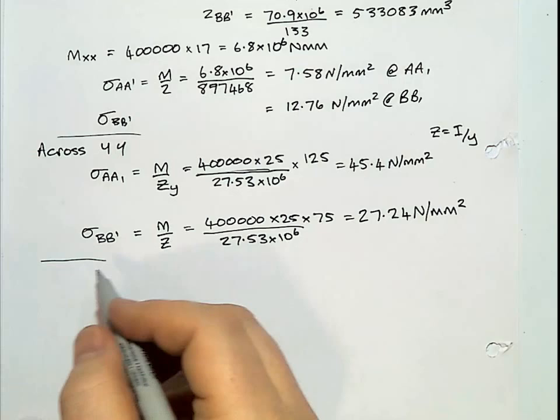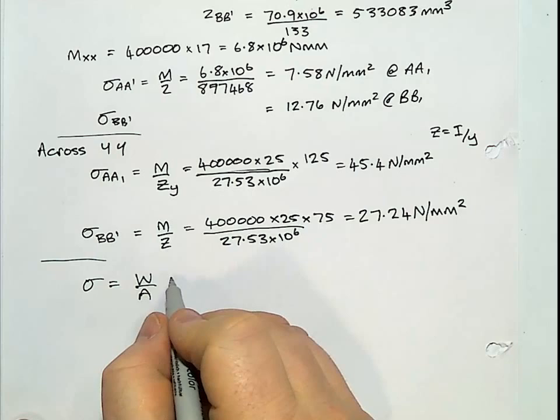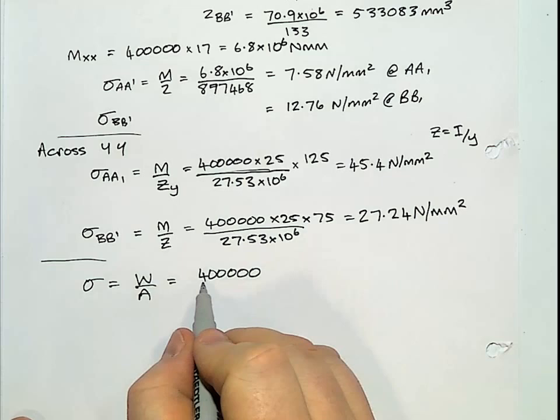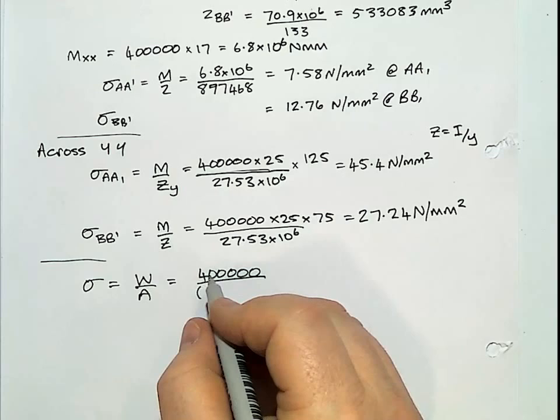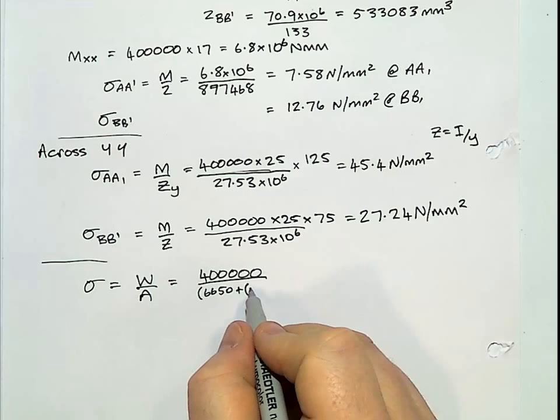In terms of the direct stress, that's the W over A. What we have is this 400,000 divided by the area of the whole column. So this is the I section plus the plate, which was 250 by 12.